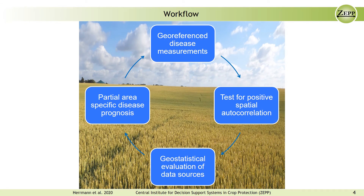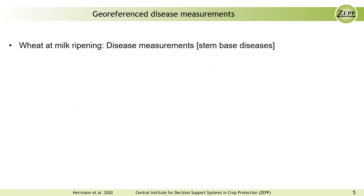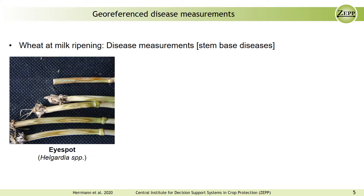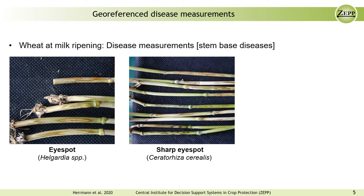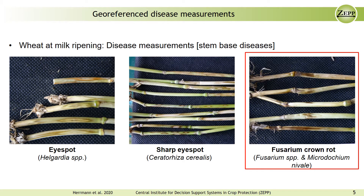The workflow for model development mainly consists of four steps, which are shown here. The model is based on geo-referenced disease measurements, which were sampled over several years on winter wheat fields in Germany. At milk ripening, disease measurements were executed to evaluate the spatial distribution of the following stem-based diseases: eye spot, sharp eye spot, and fusarium crown rot. In this video presentation, only results considering fusarium crown rot are shown, since it was the most prevalent disease surveyed.